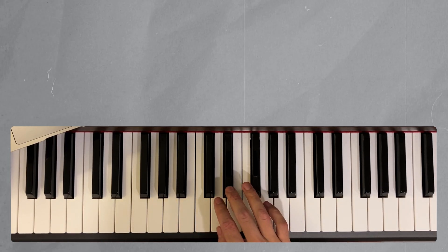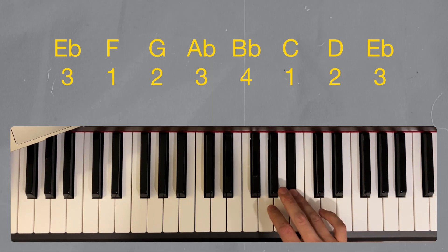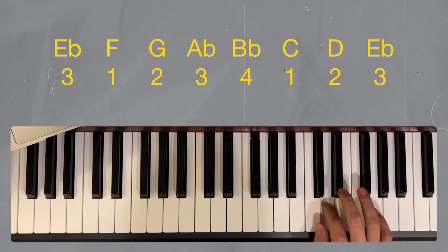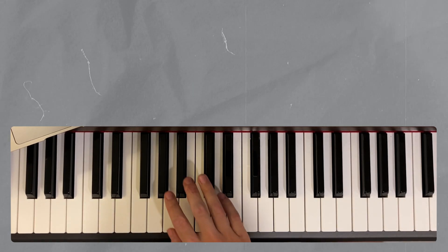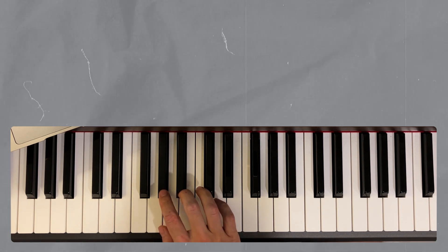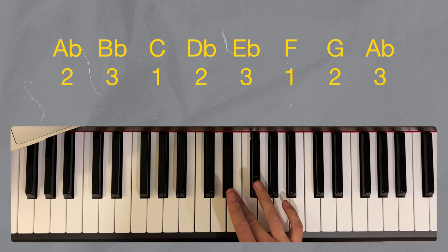For E flat, again starting with 3, 1, 2, 3, 4, 1, 2, 3. For A flat, starting with 2, 2, 3, 1, 2, 3, 1, 2, 3.